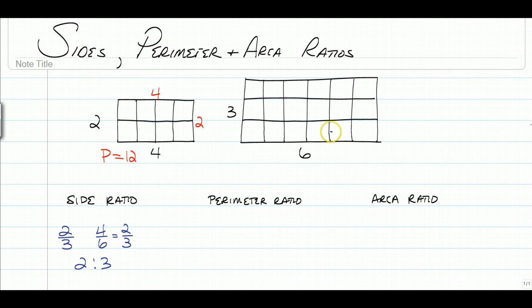And then if we're going to find the perimeter of the bigger one, we're going to have this side is 3 and this is 6. We're going to add all those together, and we're going to have a perimeter of 18. So the ratio of the perimeter is 12 over 18, which reduces to 2 thirds.